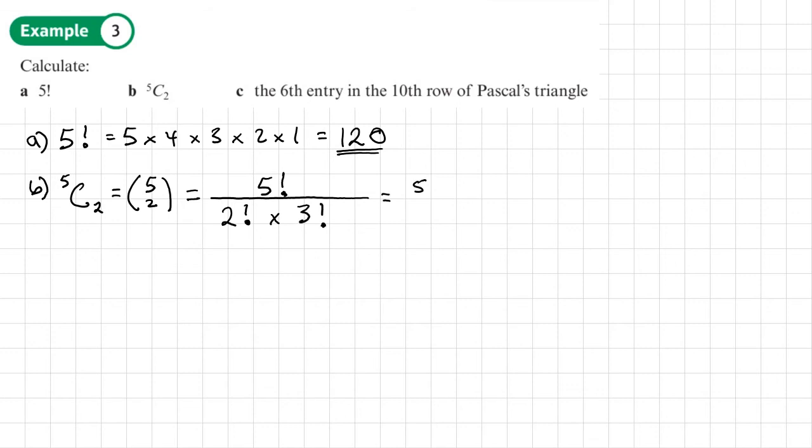So that would be 5 times 4, times 3, times 2, times 1. Again, we could work this out on our calculator. Over 2 times 1, times 3, times 2, times 1. Now look, we've got some stuff here that can cancel down. We've got 3 times 2, times 1, we're times in by that, so we can cancel those out. So it just becomes 20 over 2, so we get a value of 10.